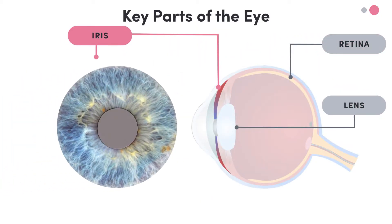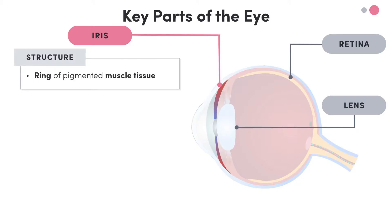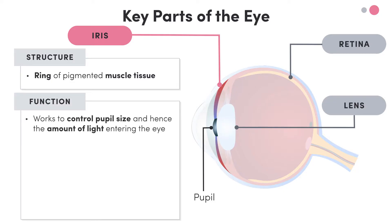So, this is the iris. The iris is this ring of pigmented muscle tissue, and we refer to this opening at the center of the iris as the pupil. Remember, light enters the eye through the pupil. So, the iris works to control pupil size, and as a result, the amount of light entering the eye.